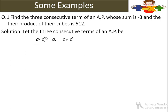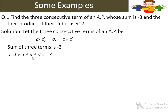Sum of the 3 terms is minus 3. तो a minus d plus a plus a plus d equals minus 3. d minus का है और d plus का है — दोनों cancel हो जाएंगे. हमारे पास 3a equals minus 3 बचेगा. So a equals minus 1.